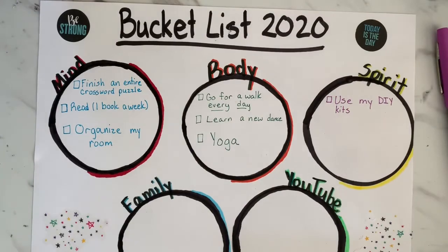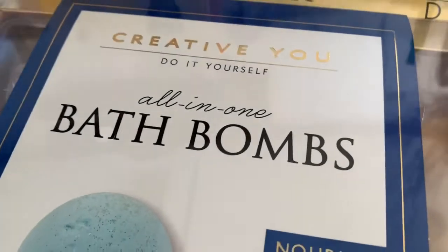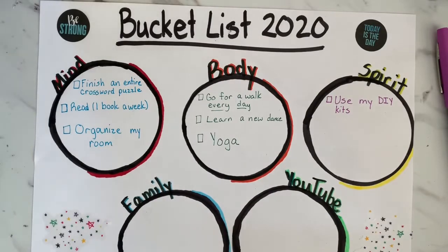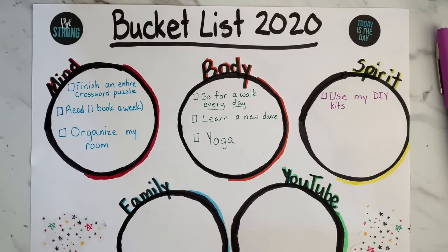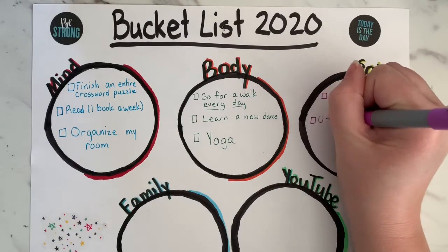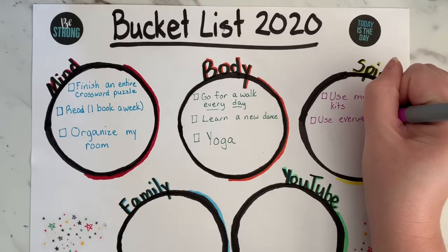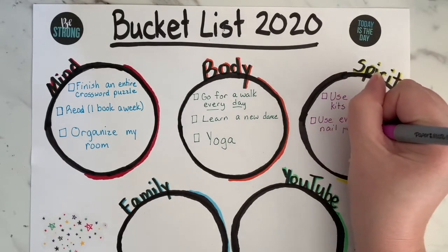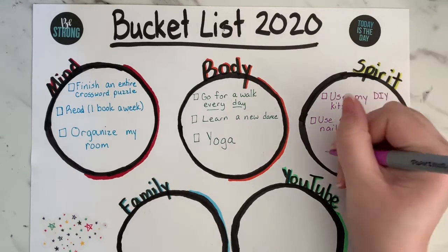One thing I thought about was to use my DIY — that stands for do-it-yourself — kits that I got for Christmas from my parents. They look like this, and there are even some soap-making kits. If you have a Christmas present you got and haven't been able to play with yet, now is a good time. The next thing I want to do is use every nail polish I have in my cabinet — I have a ton.